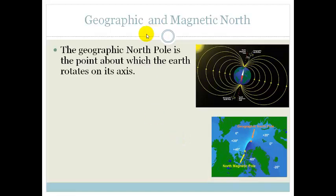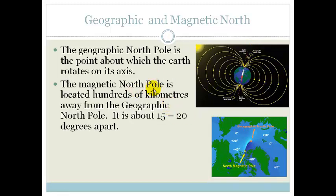Now, there is a difference between the geographic and magnetic north. The geographic north pole is the point about which the Earth rotates on its axis. We know the Earth rotates, and the line along which it rotates is actually the geographic north pole and the geographic south pole. Whereas, the magnetic north pole,